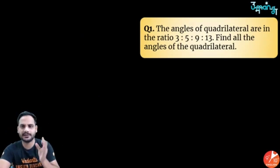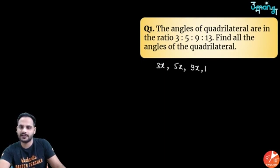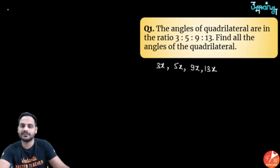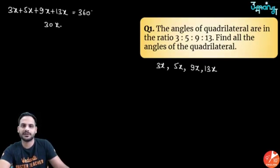We know the sum of interior angles of a quadrilateral is 360 degrees. If the angles are in ratio 3:5:9:13, I take them as 3x, 5x, 9x, and 13x. So 3x + 5x + 9x + 13x = 360°, giving 30x = 360°, so x = 12.